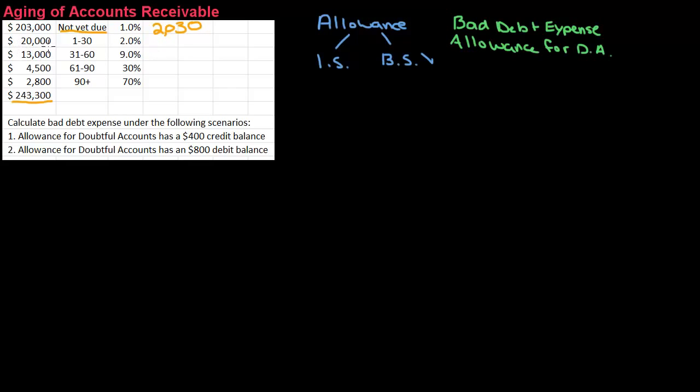We have $20,000, which is 1 to 30 days overdue. So that means they've gone past the 30-day window we gave them to pay. So now they're late. And 2% is not collectible. So if I take $20,000 times 2%, it's a very small amount that's only $400.